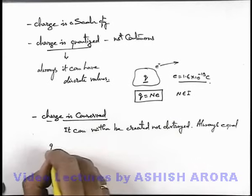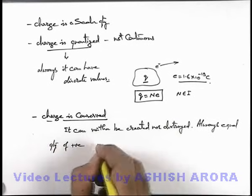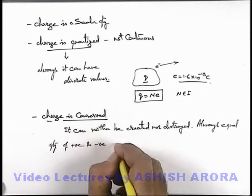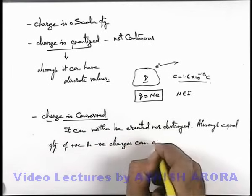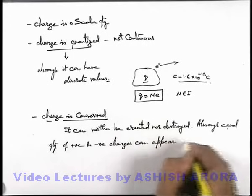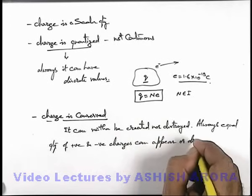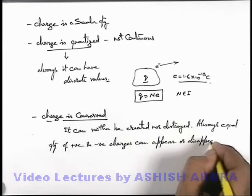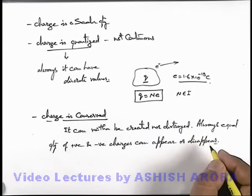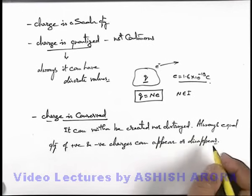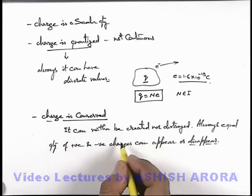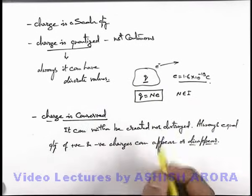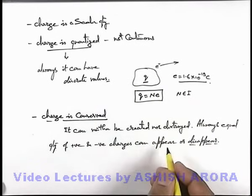So we can say always equal quantity of positive and negative charges can appear or disappear. That means whenever charge neutralizes, it's equal quantity of opposite charge then charges will disappear in equal quantity. Whenever these are generated, like the example we have discussed, that will always be in equal quantity only.